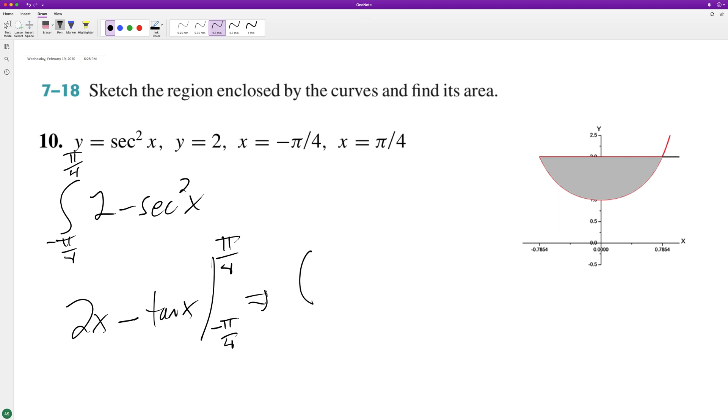So we have two pi over four minus the tangent of pi over four, which is one, minus negative pi over four. That's negative two pi over four, which reduces to negative pi over two. And tangent of negative pi over four equals negative one, so minus negative one. We end up with pi over two minus one.